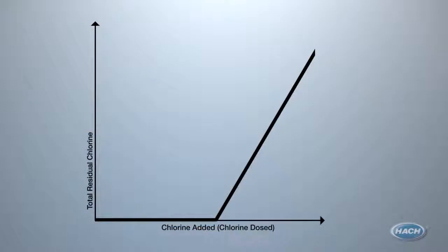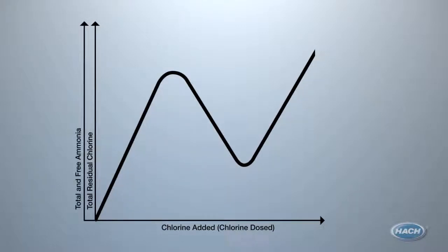When ammonia is added to chloraminating systems or is present in the system, our graph changes, pushing up the amount of matter the chlorine has to bond with initially. This creates what is known as the chloramination curve.